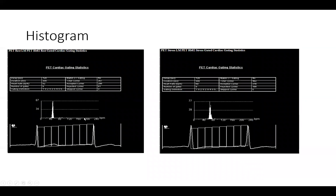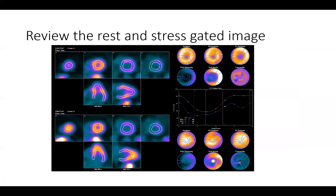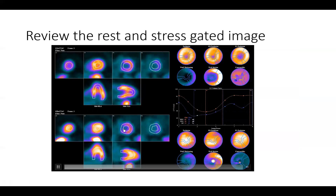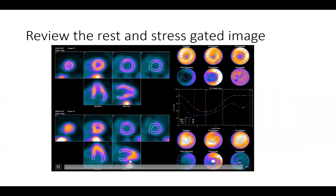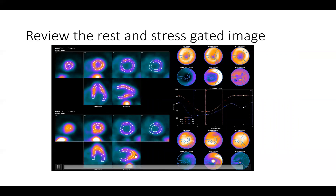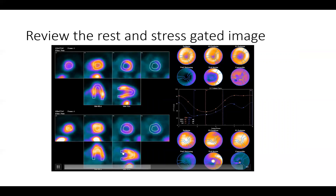We go next to the histograms. You can see the rest histograms and the post-stress histograms — these are important QA images to make sure that we have stability of the heart rate from rest to stress so we can trust the ejection fraction generated from these images. Then we go to the gated images. On the stress images you have nice contour and nice tracking of the left ventricle, but on the rest images you can see poor tracking — the software could not identify the left ventricular cavity to track.